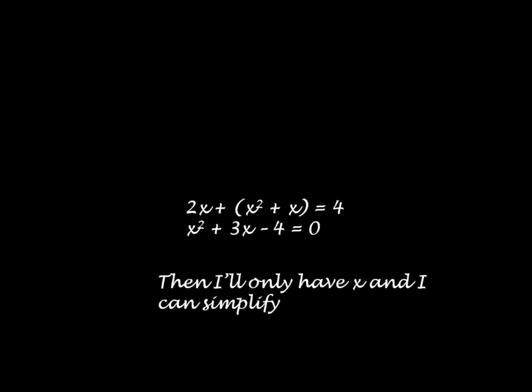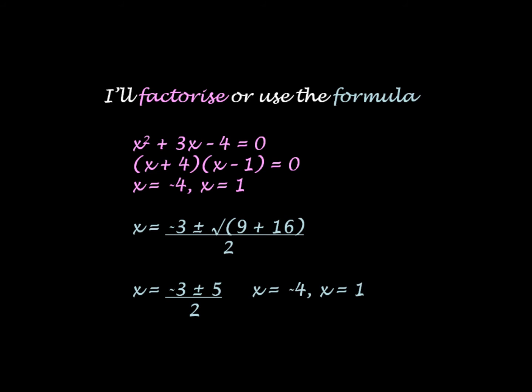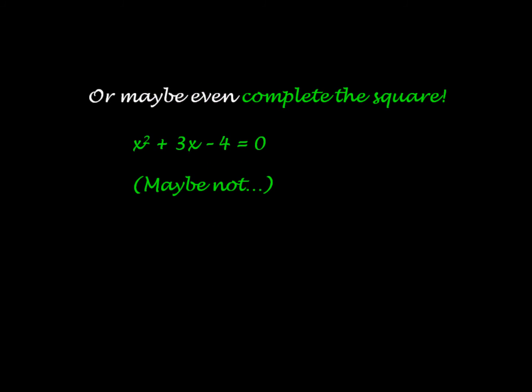I want to solve harder equations. I can't eliminate cause it's called x squared. But I'll substitute if I get y on one side. Then I'll only have x and I can simplify. I'll factorise, I'll use the formula, or maybe even complete the square.